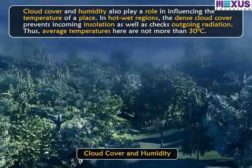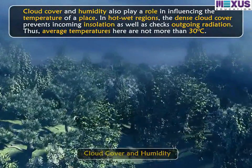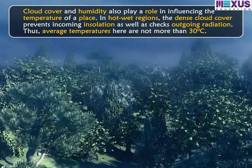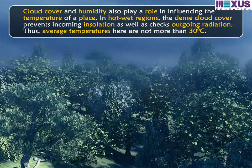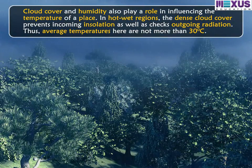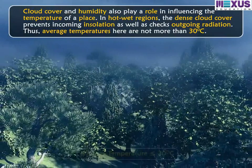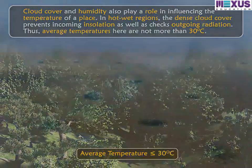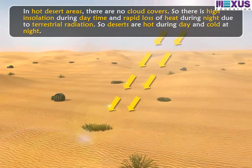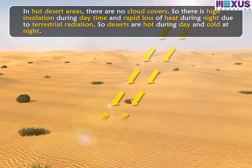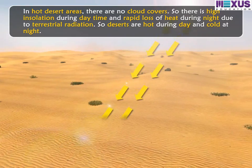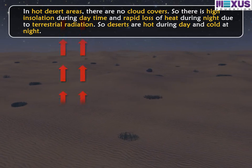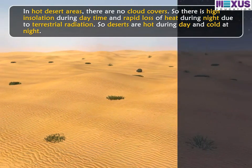Cloud cover and humidity also play a role in influencing the temperature of a place. In hot-wet regions, the dense cloud cover prevents incoming insolation as well as checks outgoing radiation. Thus, average temperatures here are not more than 30 degrees Celsius. In hot desert areas, there are no cloud covers, so there is high insolation during daytime and rapid loss of heat during night due to terrestrial radiation. Hence, deserts are hot during the day and cold at night.